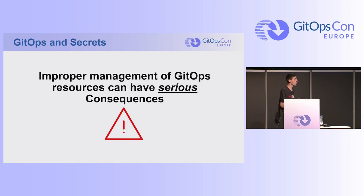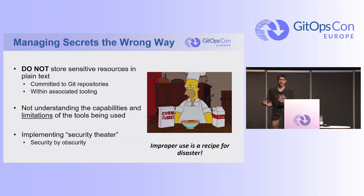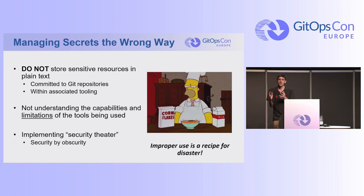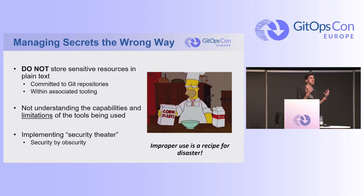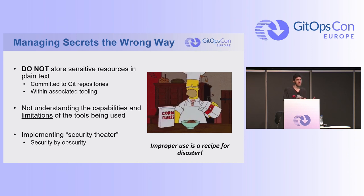However, most importantly, improper management of GitOps can have very serious consequences. What is managing GitOps the wrong way? Number one — and we've talked about it earlier today — do not in any way put password-sensitive material as plain text into Git. Because as soon as you commit it to Git, it's there forever in most cases.